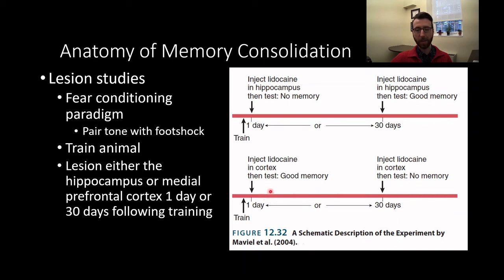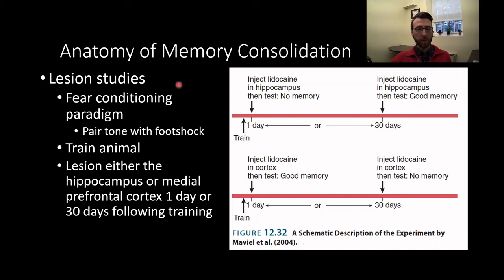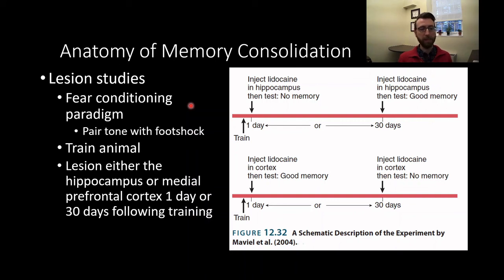We see an interestingly reversed pattern in the cortex. If we inject lidocaine into the frontal cortex one day after training, memory is just fine — no impairment is produced. However, at 30 days, lidocaine in the cortex produces a dramatic deficit in memory. Taken together, this suggests that while certain forms of memory are initially dependent on the hippocampus, they become independent with time and come to depend on newer structures like the cortex. This is what we call systems consolidation — the idea that memory is consolidated and moves from one system to the other, initially depending on the hippocampus and then becoming independent of that system once fully consolidated.